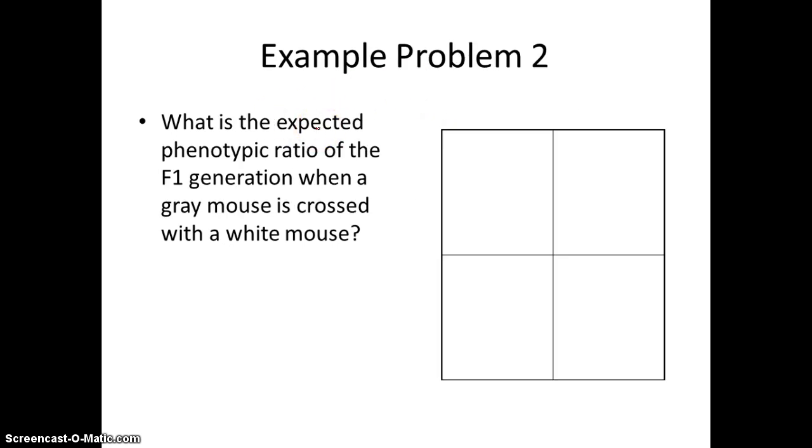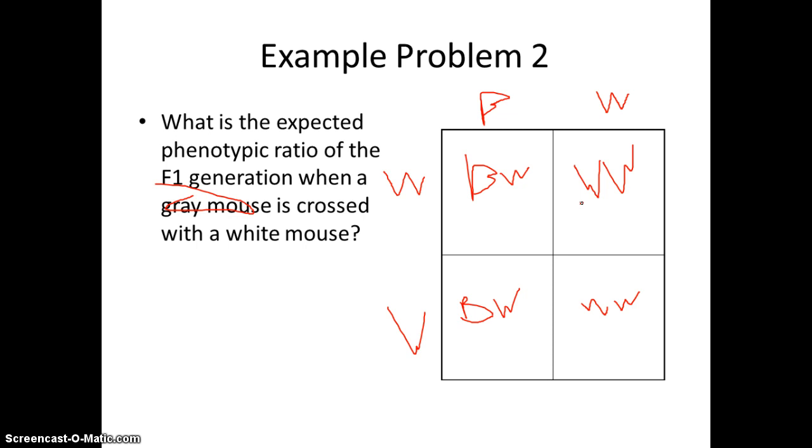So here's just another problem. So what is the expected phenotypic ratio, and I don't really care that much about the ratios in this case of the F1 generation when a gray mouse, so we have a gray mouse, and a gray mouse is going to be BW, and we're crossing the gray mouse with a white mouse, so that's going to be WW. So BW, BW, BW, BW, and BW. So if you were going to say the ratios here, these two, with the black and white alleles, they're going to be gray, so 50% will be gray, and these two, WW, 50% will be white.